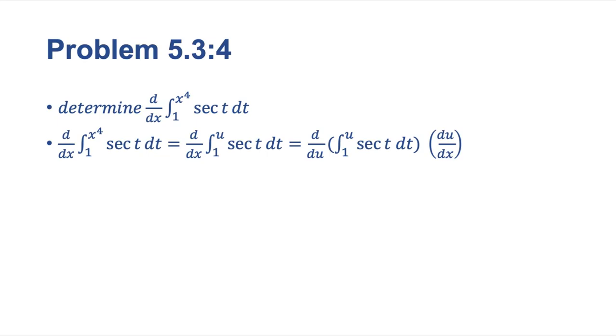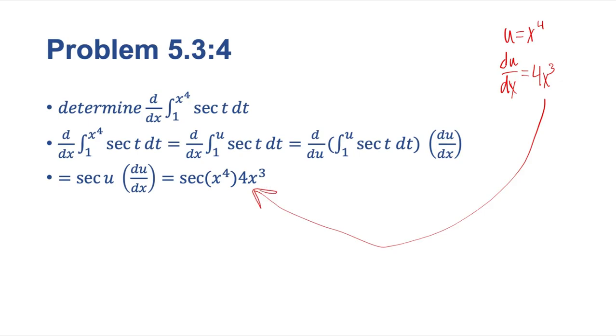And then we use the chain rule here. So then we're going to be left with the du/dx derivative. And that's going to be easy to find. We'll do that later though. And that's going to be equal to secant of u times du/dx. And we know that we set u here equal to x to the fourth. So then of course our derivative du/dx is going to be equal to 4x cubed. And we'll just plug that in right there.